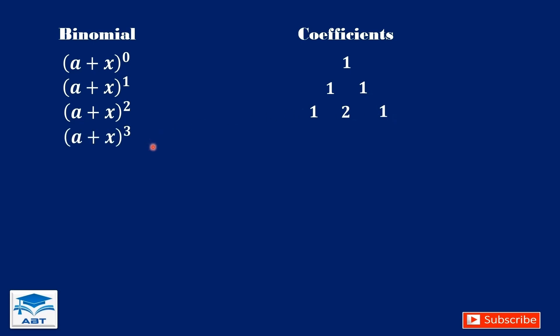For an exponent of 3, we start with 1. Then 1 plus 2 is 3, and 2 plus 1 is 3. Then we end with 1.